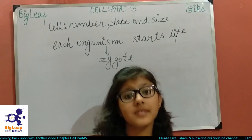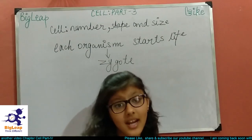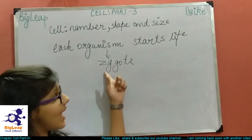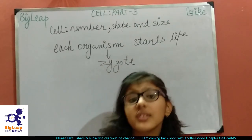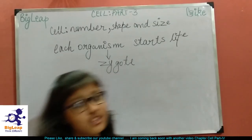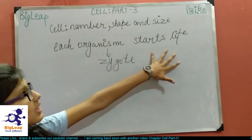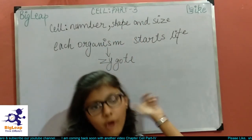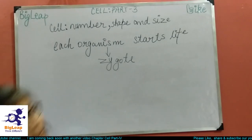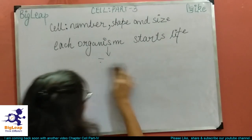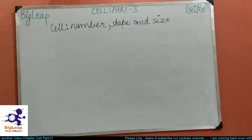All multicellular organisms start their life from a single cell called a zygote. A zygote is a fertilized egg, which is the result of the fertilization of male and female gametes. So all multicellular organisms start their life from a zygote.